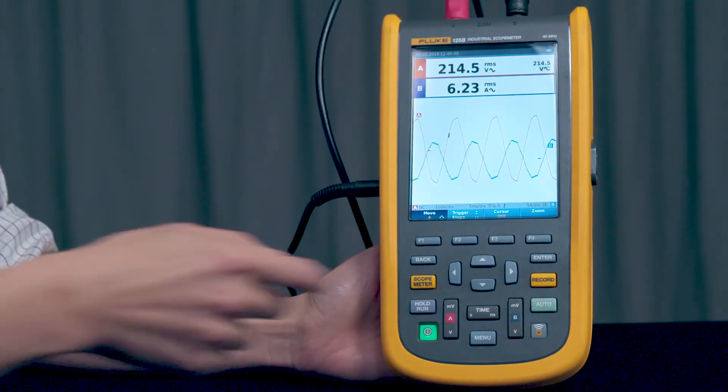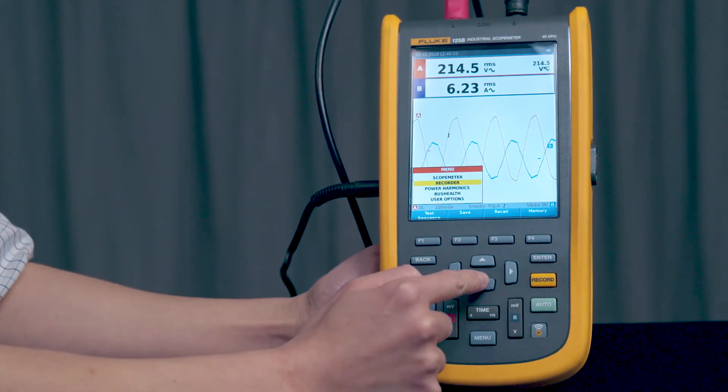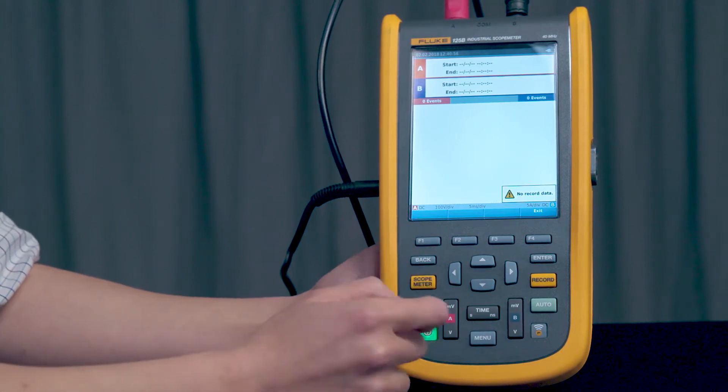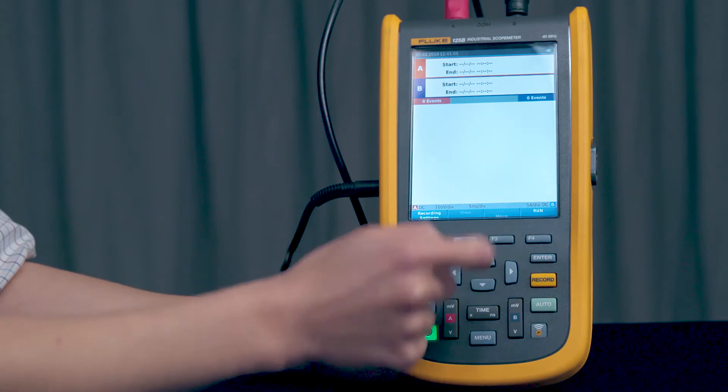To get to record mode, press the Menu button and then use the arrow key to scroll down to Recorder. Once you have that highlighted, press Enter button. In this case, we have no data recorded. But if there was data recorded, there would be a Yes-No option there to either view the previous data or not. In this case, we'll press F4 to exit.